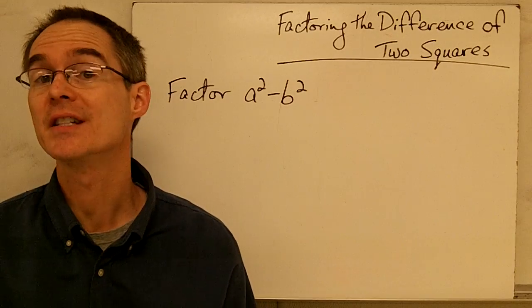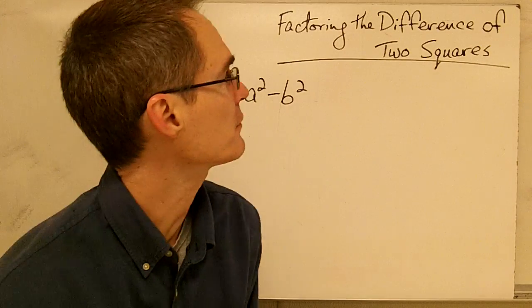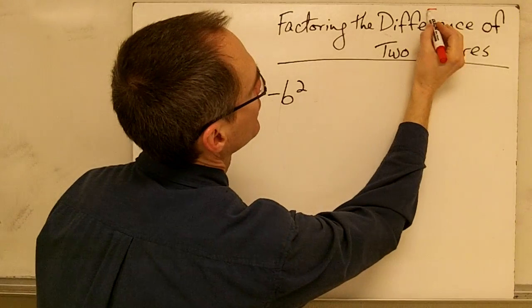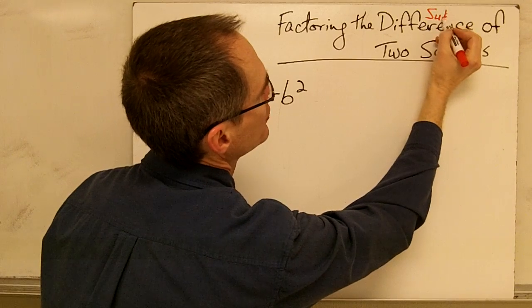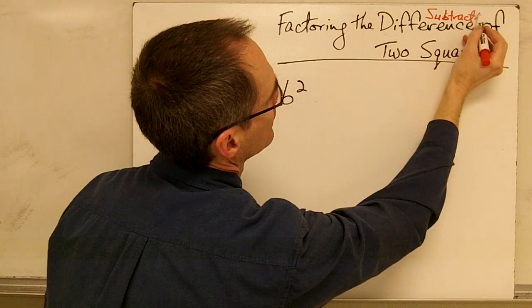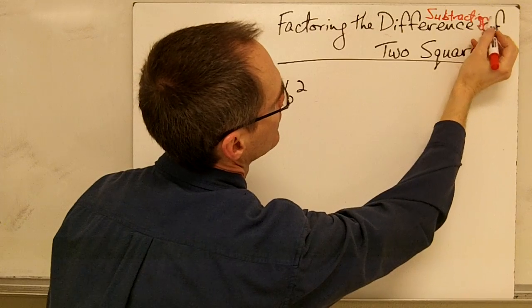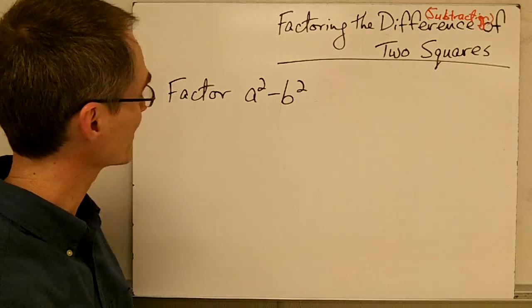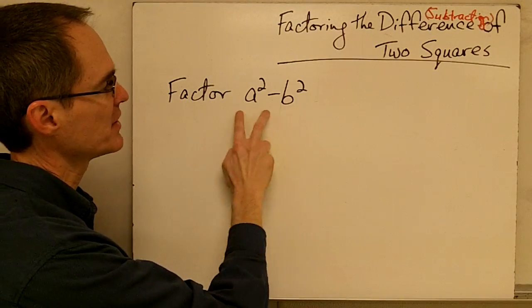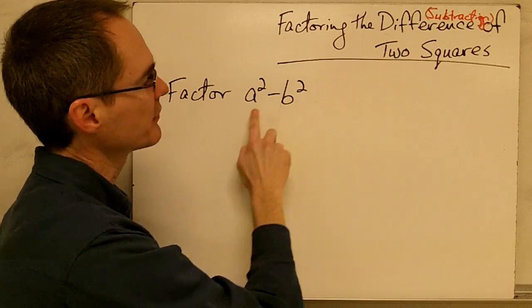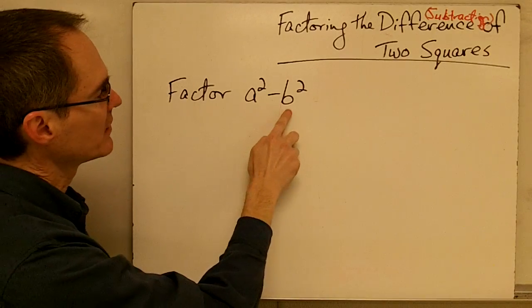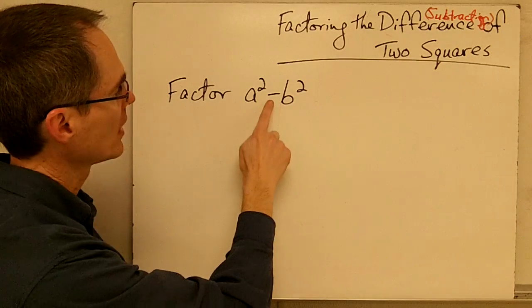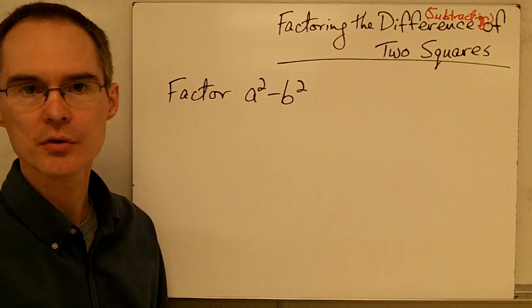In this video we're going to talk about how to factor the difference of two squares. The word difference in mathematics means you're going to be subtracting something. In this case, we're going to be subtracting numbers that are perfect squares. For example, the expression a squared minus b squared is an example of the difference of two squares — a squared and b squared are perfect square numbers, and we are subtracting them.